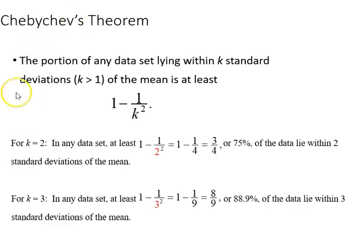According to Chebychev's theorem, the portion of any data set lying within k standard deviations, so we have to substitute in the actual number, where k is greater than one of the mean is at least one minus one over k squared. If k is two, then any data set at least one minus one over two squared is going to give us three-fourths, or 75 percent, of the data lie within two standard deviations of the mean.